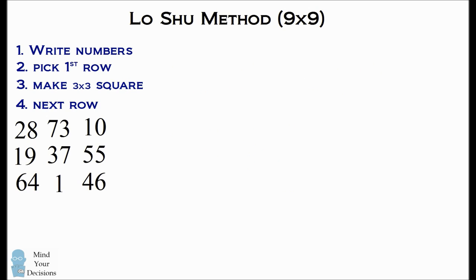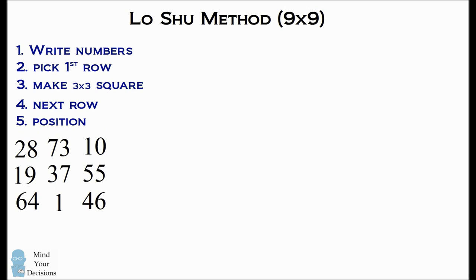Once you create these 3 by 3 squares, the question is, how are you going to position them to create a 9 by 9 magic square? So the next step is to position these 3 by 3 squares. So notice in the original magic square we have the numbers 1 through 9, and there are 9 rows that we want to put 3 by 3 grids.